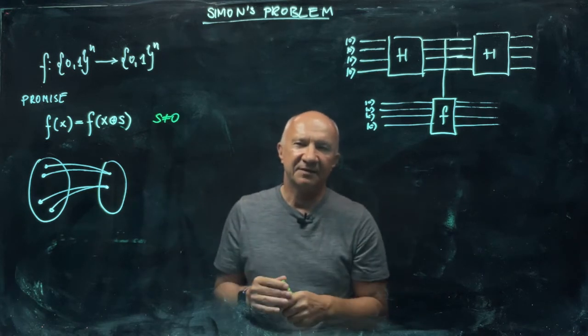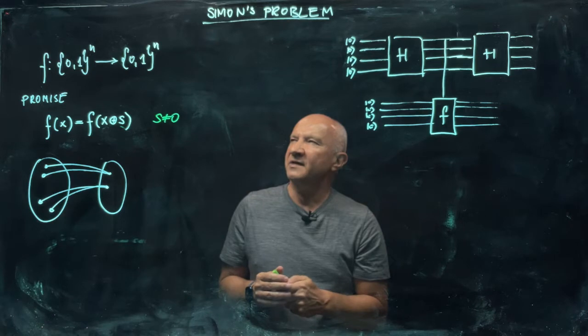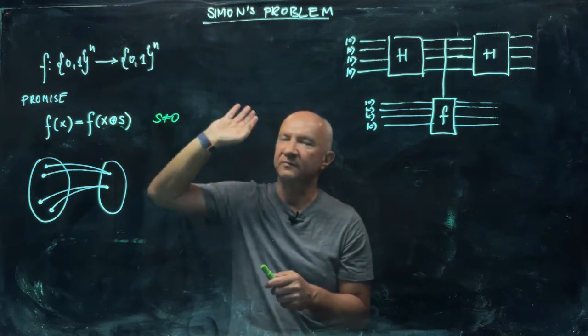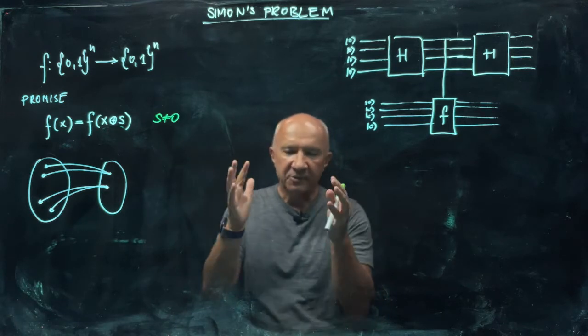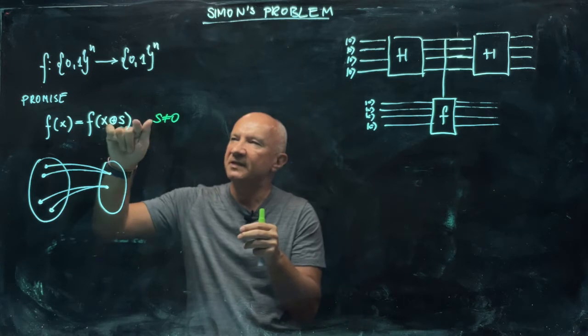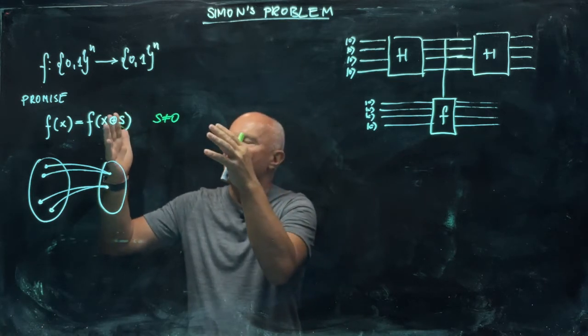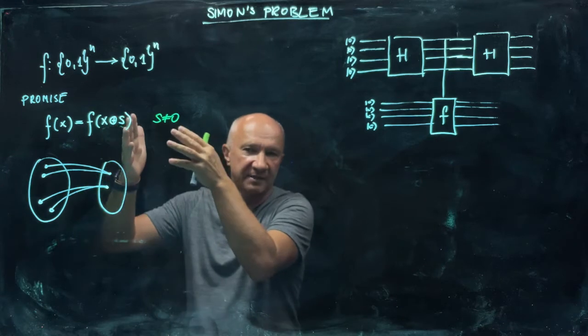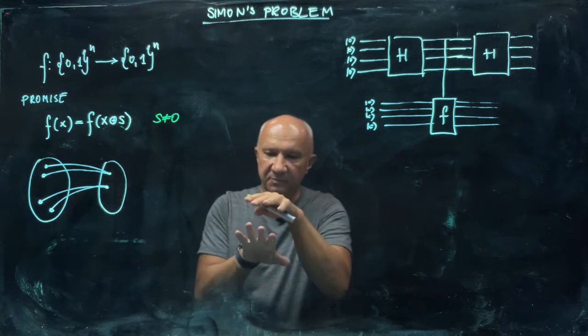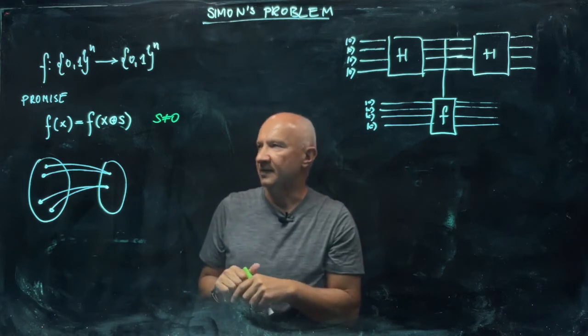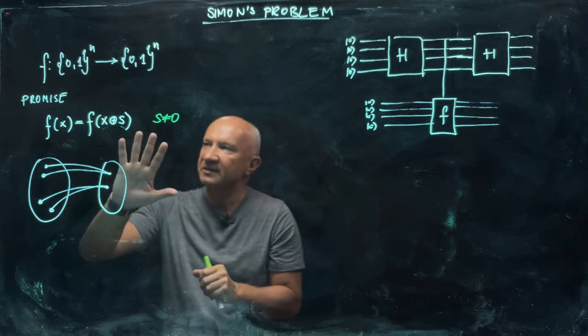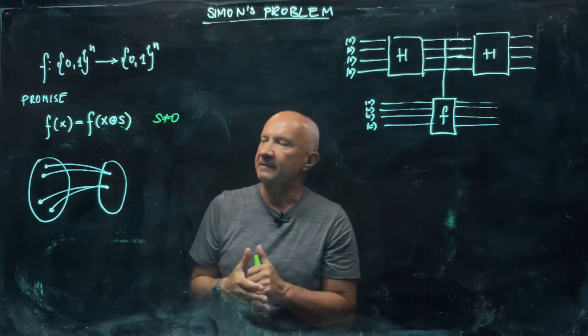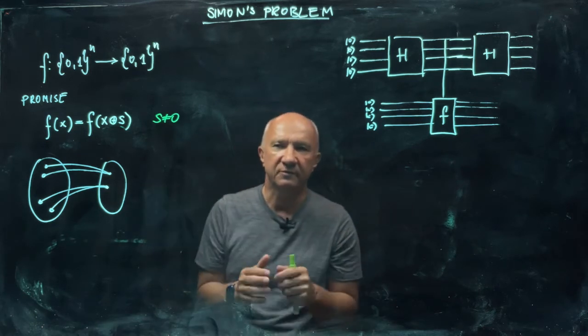So here comes Dan Simon's problem. Dan Simon just looked at the Boolean function that maps a set of binary strings of length n into a set of binary strings of length n. And we are promised that this function is two to one. So there is some secret nonzero string s that acts like a period. So f of x is equal to f of x plus s. And this addition here is the binary bit by bit addition. So the underlying structure is this group Z_2^n.